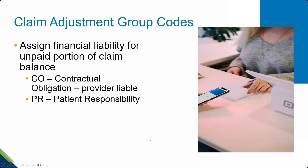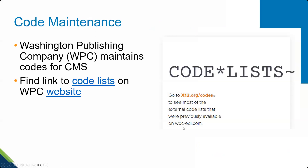When looking at a remittance advice, codes provide information about the claim. Claim adjustment reason codes explain why a claim paid differently than was billed. Remittance advice remark codes provide more details about an adjustment. Group codes convey the financial responsibility for any unpaid portion of a claim balance. A CO group code means contractual obligation — the provider is liable and can't bill the patient. A PR group code means the patient is financially responsible. You can find code lists on the Washington Publishing Company's website, which maintains the codes for CMS.